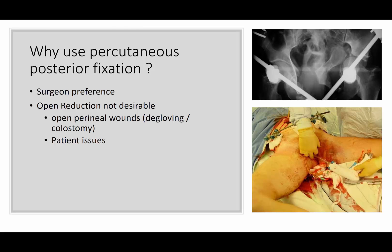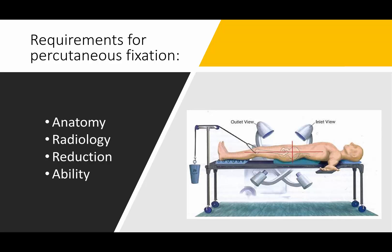So why use percutaneous iliosacral screw fixation posteriorly? It may be surgeon preference, or you may have a case where open reduction is simply not desirable, like an open pelvic fracture. There are many requirements for percutaneous fixation. The anatomy has to be amenable to it — sacral dysmorphism might make it difficult. You have to have very good radiology to see what you're doing, and you have to have the ability to do this safely and to get a good reduction.